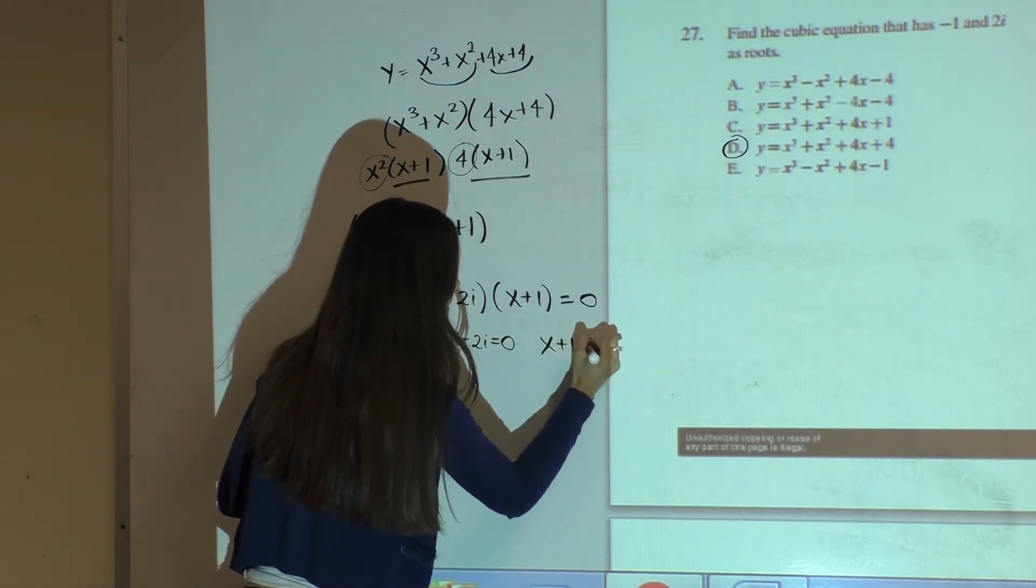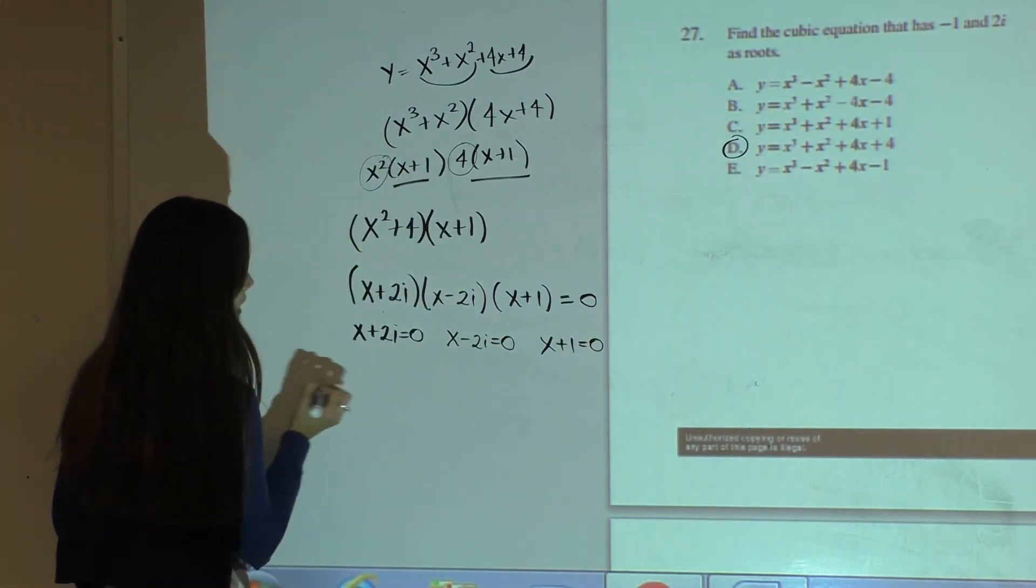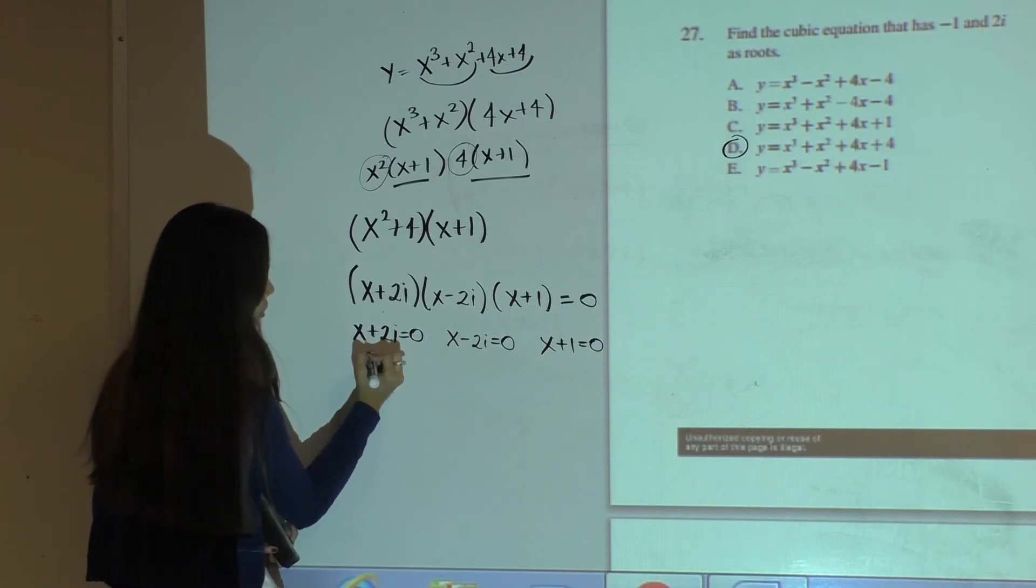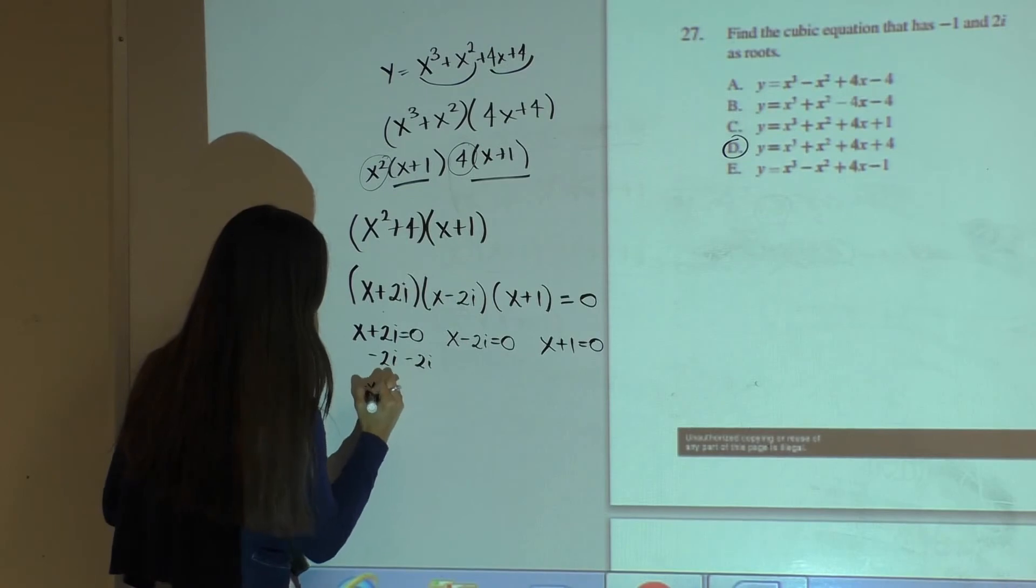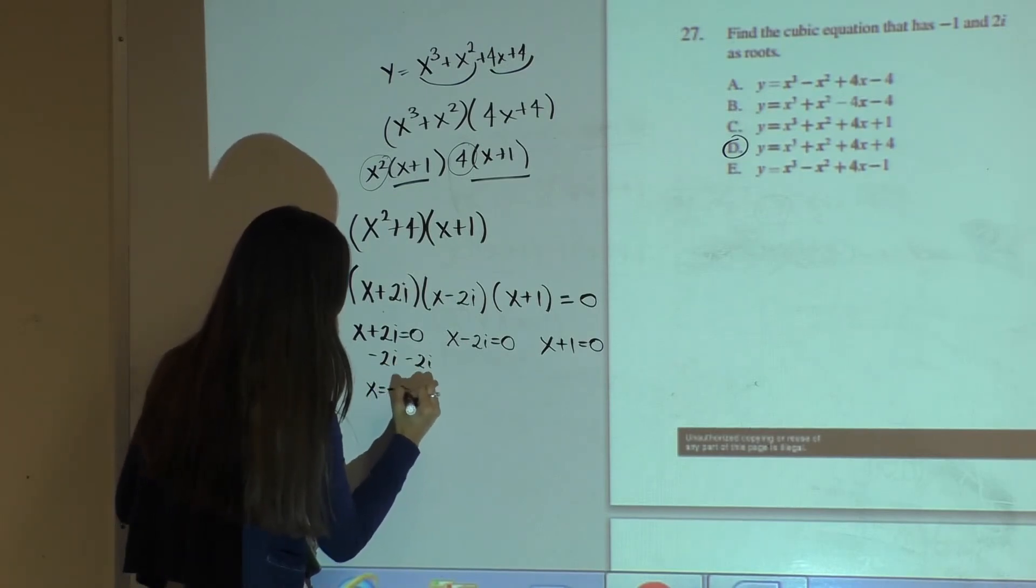And you solve for x. So in this case, you're adding 2i, so I will subtract 2i from both sides and get that x can equal negative 2i.